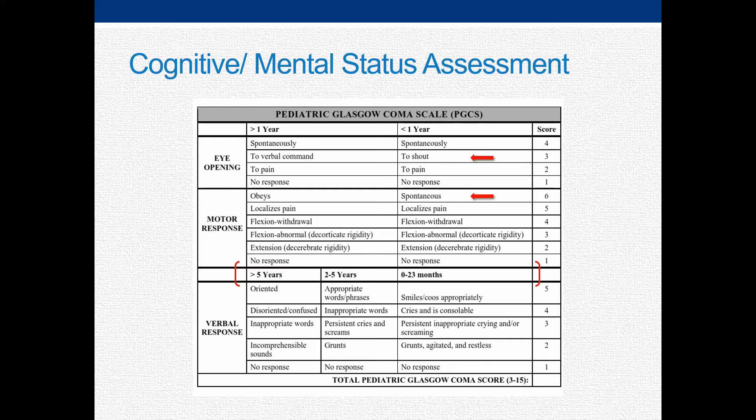Counter that with the combative fifteen-year-old that keeps repeating himself and is unable to quiet for more than a few seconds. This will impact how you approach the remainder of the exam. As in adults, the Glasgow Coma Scale is the most common scale in use to assess level of consciousness and degree of impairment, and has been incorporated into several pediatric clinical rules used to determine the need for CT scans.